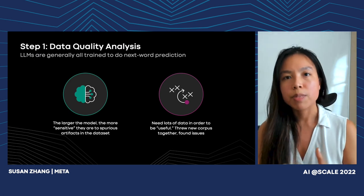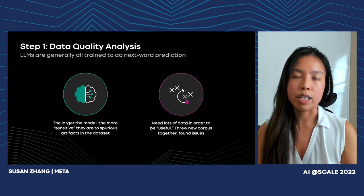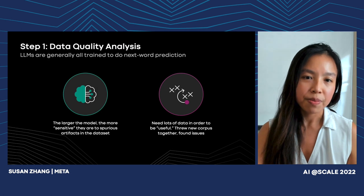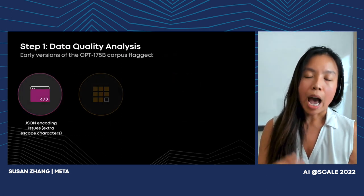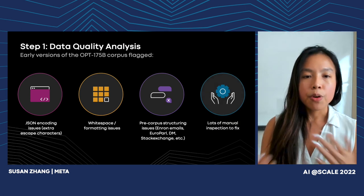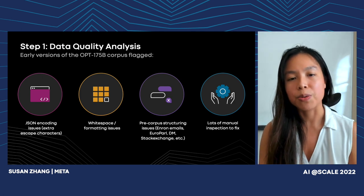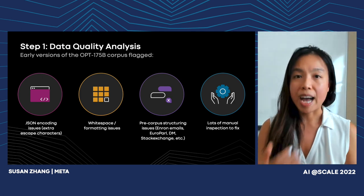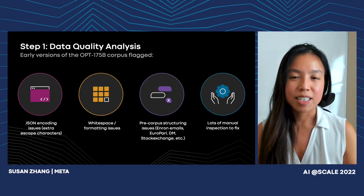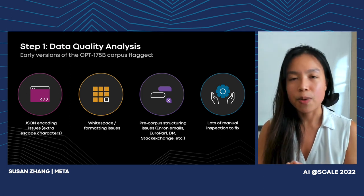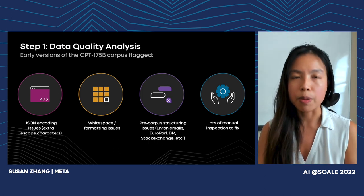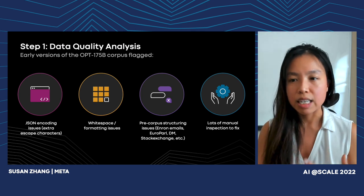At scale, these models are very data-hungry, so people generally dump the internet, clean it up a little, and throw it into the models. In our case, when we aggregated our initial corpus, there were a few things that flagged at smaller scale: issues with JSON encoding where extra backslashes got added, causing the model to become really good at predicting the next word simply by predicting backslashes. Same goes for white spacing, formatting issues, and corpus-specific structural problems — all of which are very tedious and manual to fix and identify.